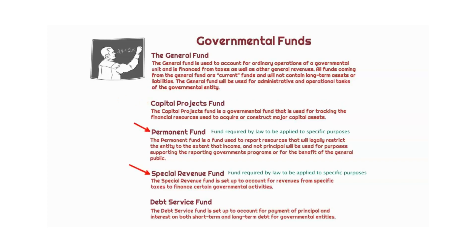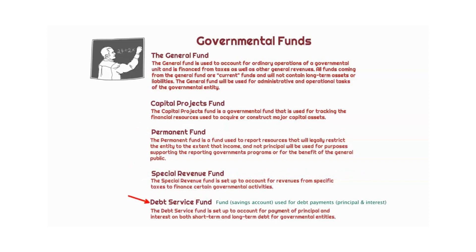The permanent fund and the special revenue fund are used to account for general governmental financial resources, and they are going to be restricted by law or contractual agreements to specific purposes other than debt services or major capital projects. They're going to exist as long as the government has resources dedicated to these specific purposes. Finally, we have the debt service fund — think of this as a separate savings account just used for debt payments. This is a fund used for reserves, and the reserves will be used to pay interest and principal payments on certain outstanding debts. The purpose of the debt service fund is to reduce the risk of a debt security for specific investors and mitigate the risk of any debt-related investments.